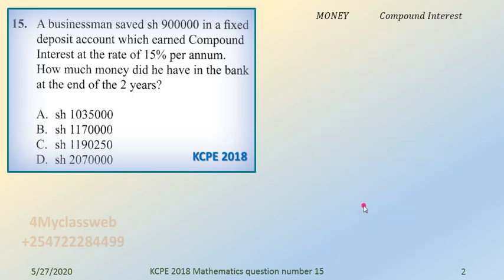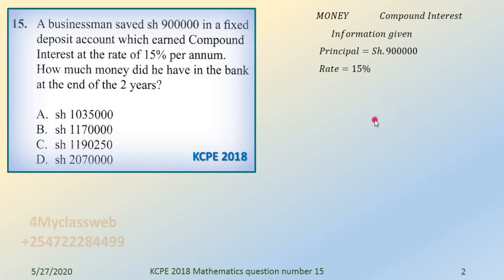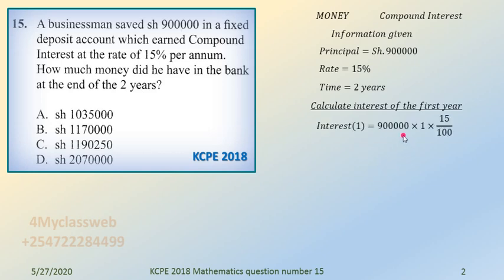The information given is: principal = 900,000; rate = 15%; time = 2 years. First, calculate the interest for the first year. You take the principal, multiply by 1 (for the first year), and then multiply by the rate. I'm calling this Interest 1 because it's the first interest for the first year.